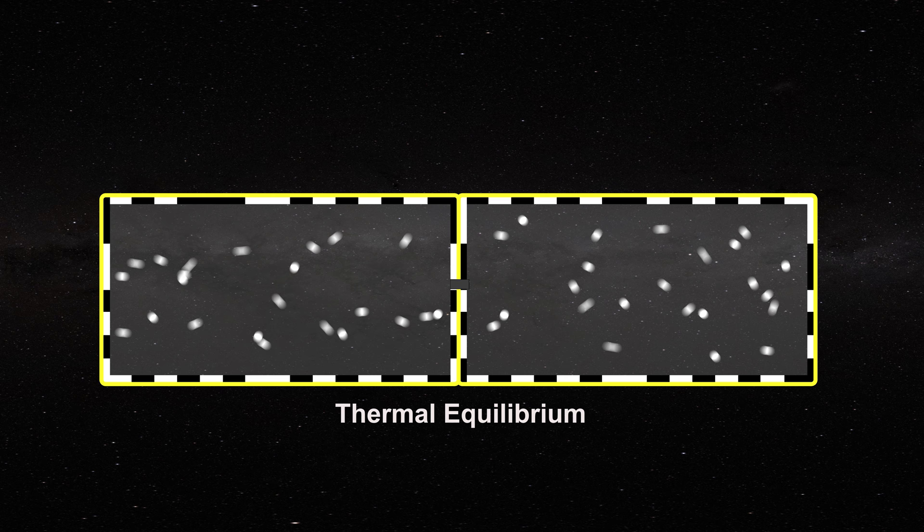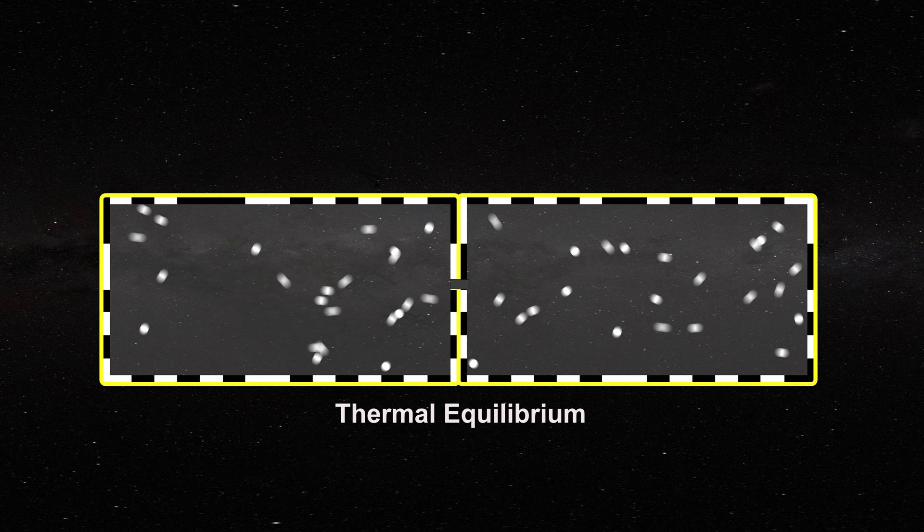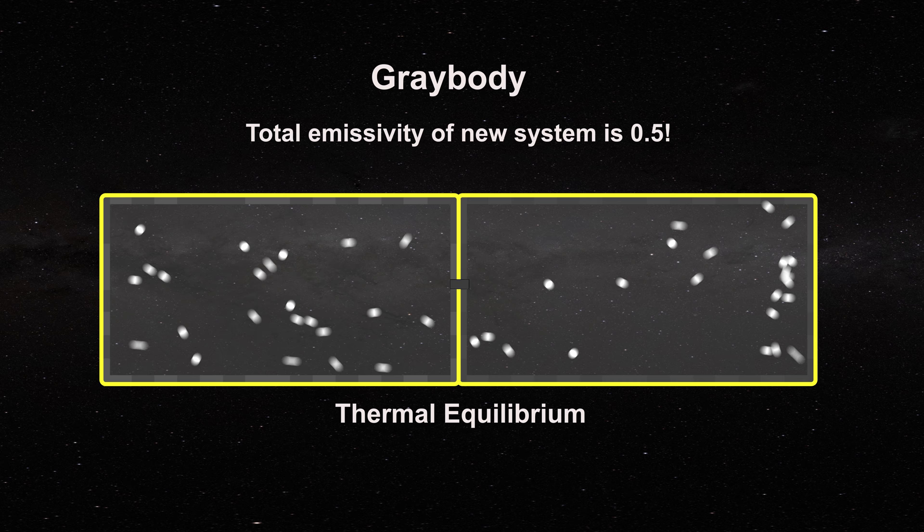No energy exchange occurred outside our system. No work was done by the system on its surroundings or on the system by the surroundings. The temperature does not change and we have not violated the second law.